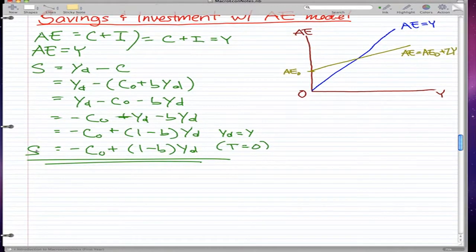The second part is, again, we start off with our equation AE equals Y. We know that AE is equal to C plus I equals Y. But we can rework this formula to make it I equals Y minus C.